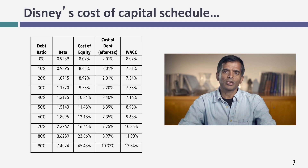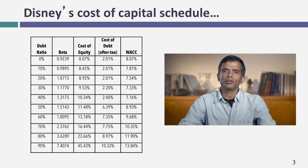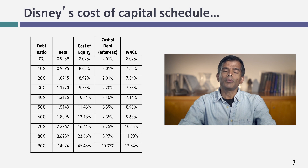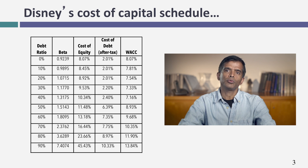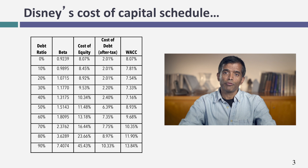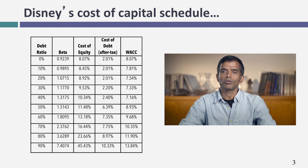Let's go back to the cost of capital schedule we derived for Disney at different debt ratios, ranging from 0 to 90%. They're right now at about 11.6% debt ratio, and their cost of capital is about 7.81%. And if you believe the schedule, at a 40% debt ratio their cost of capital will drop to 7.16%.